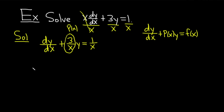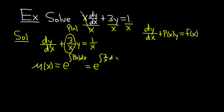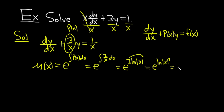Now we can compute the integrating factor. μ(x) equals e to the integral of P(x) dx, which is e to the integral of 3 over x dx. Integrating 1 over x gives the natural log of the absolute value of x, and the 3 hangs out: so this is e to the 3 natural log of the absolute value of x. Using the power rule to bring the 3 upstairs: e to the ln of the absolute value of x cubed, which equals x cubed. So μ(x) equals x cubed.